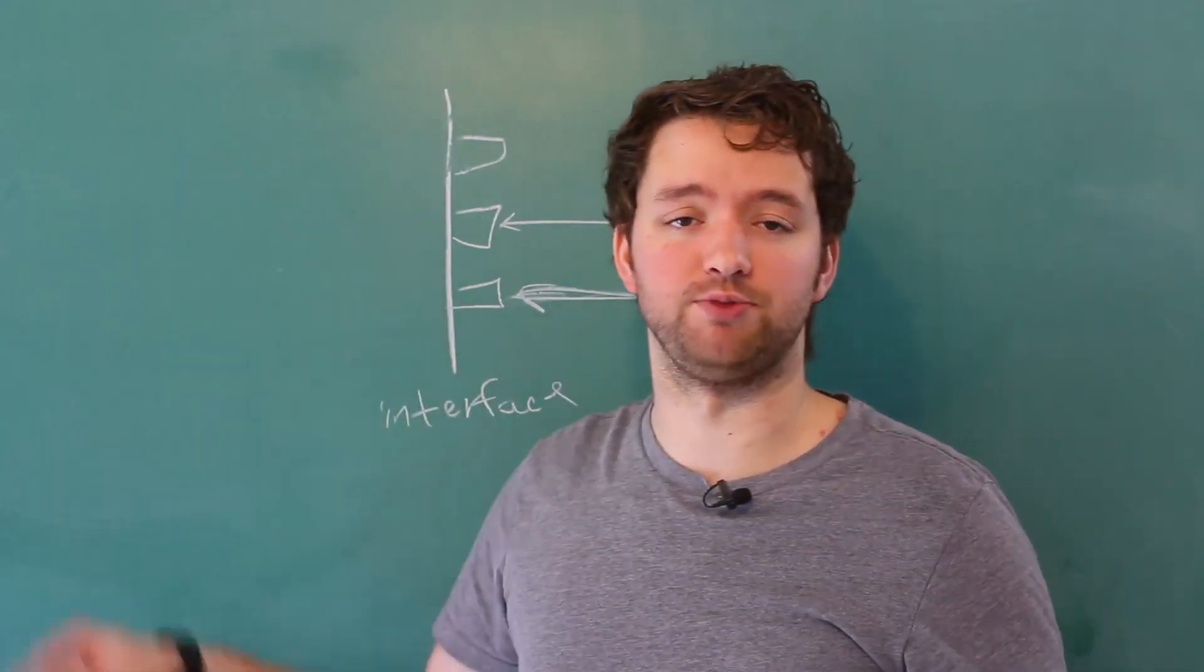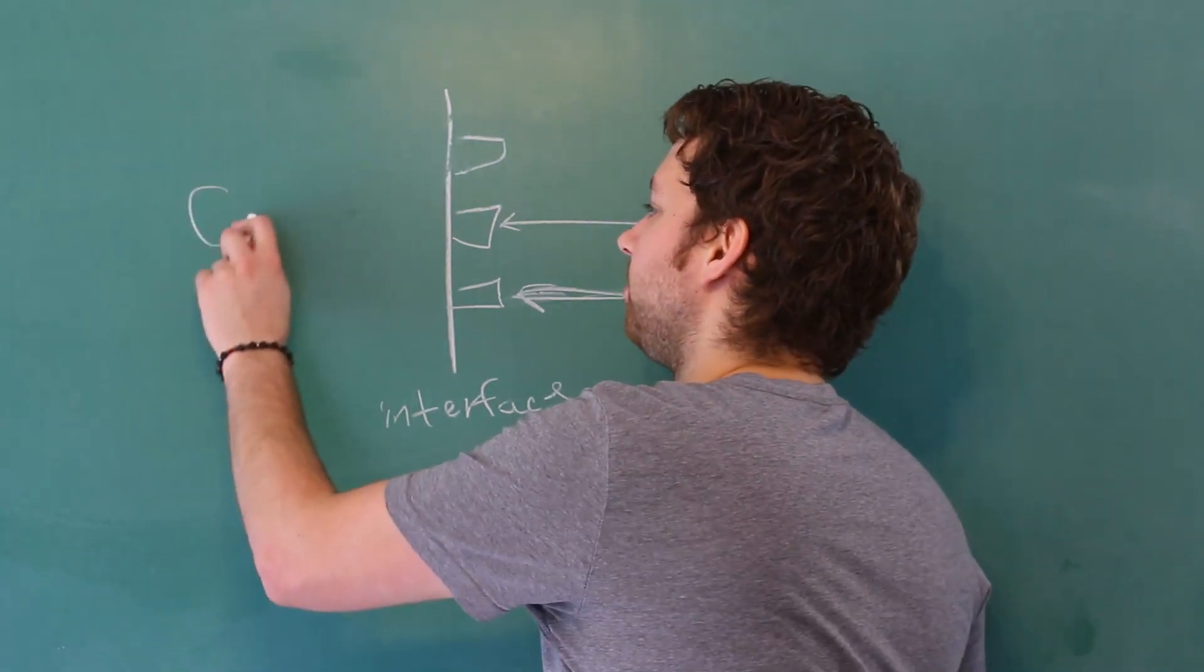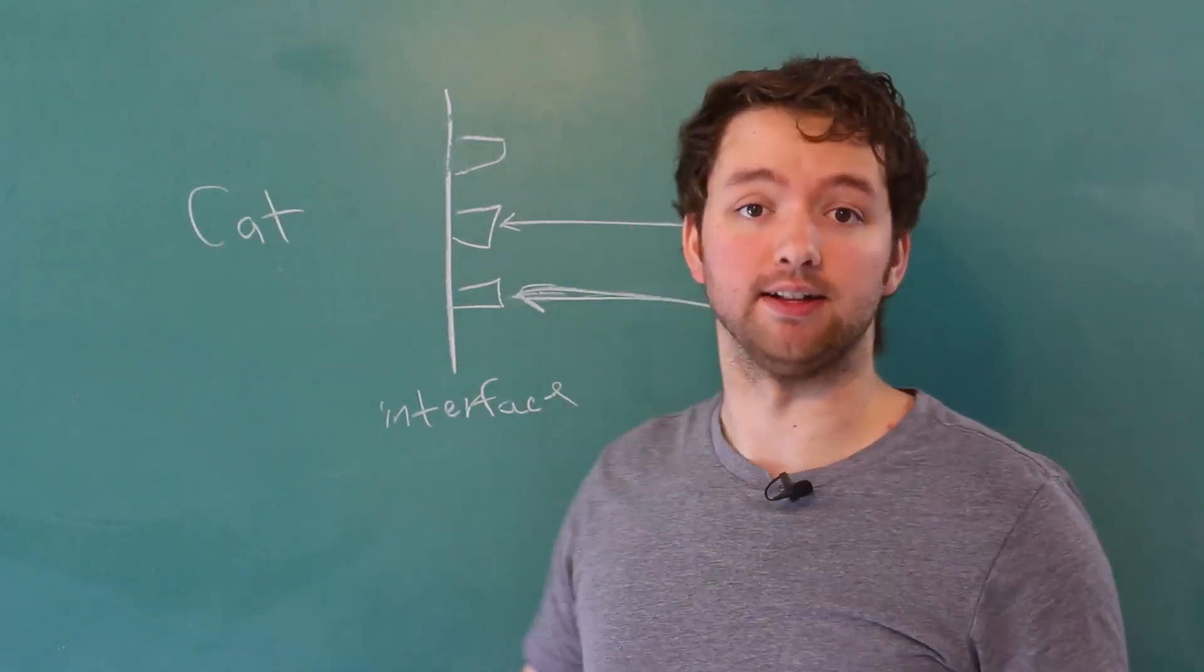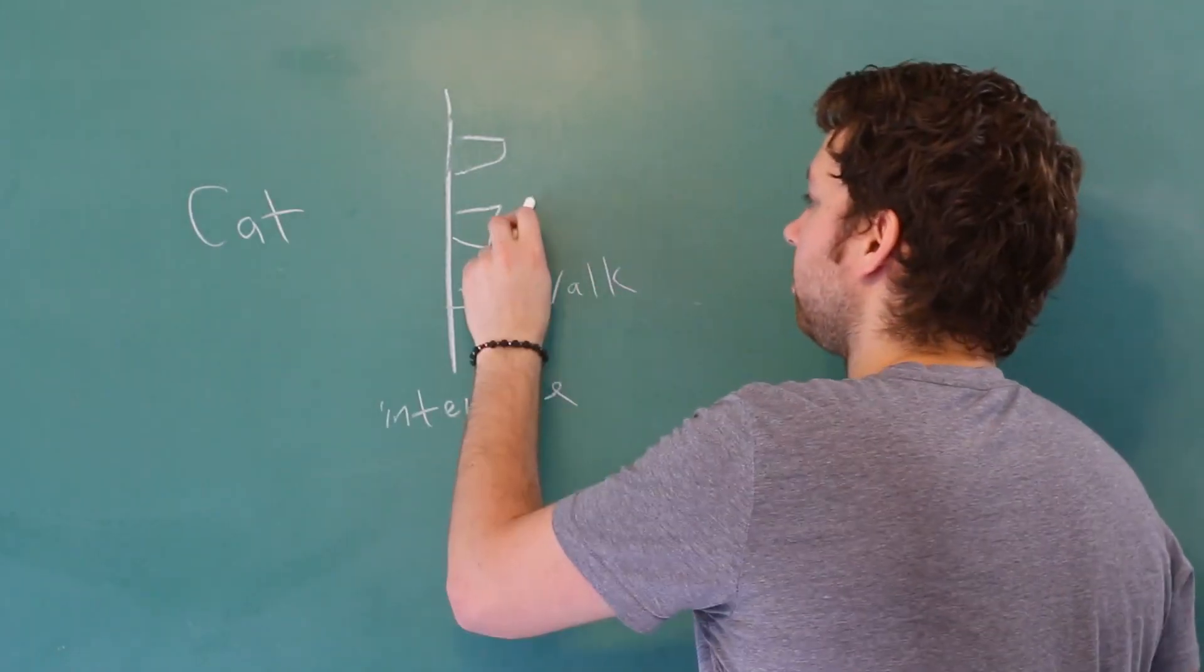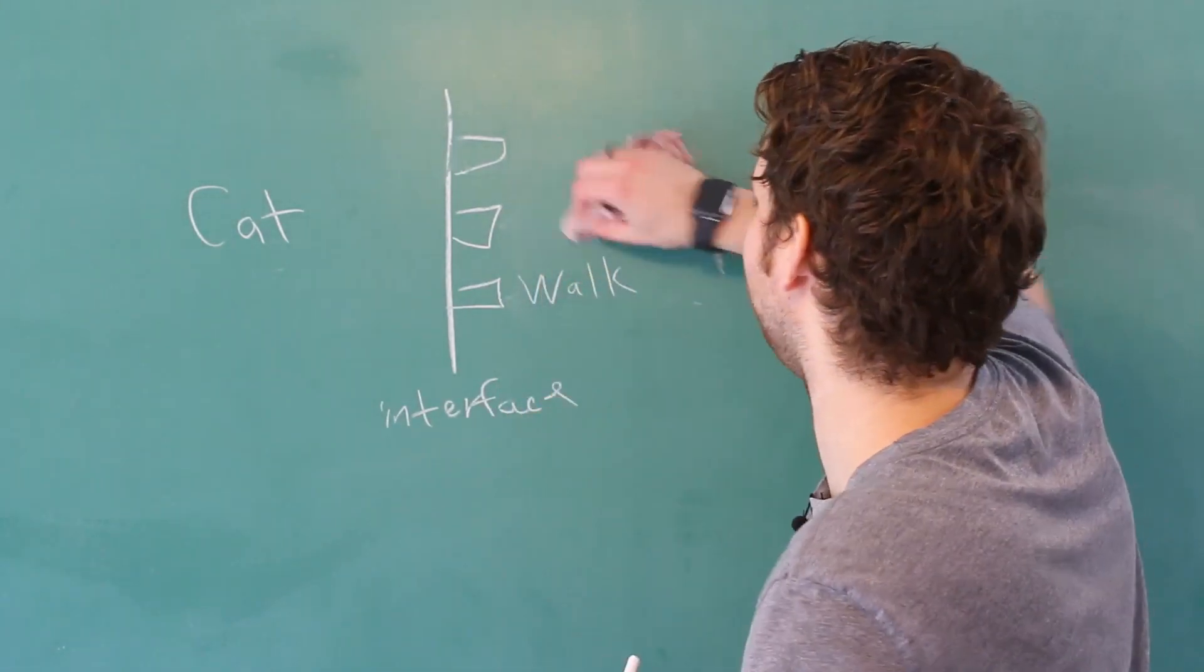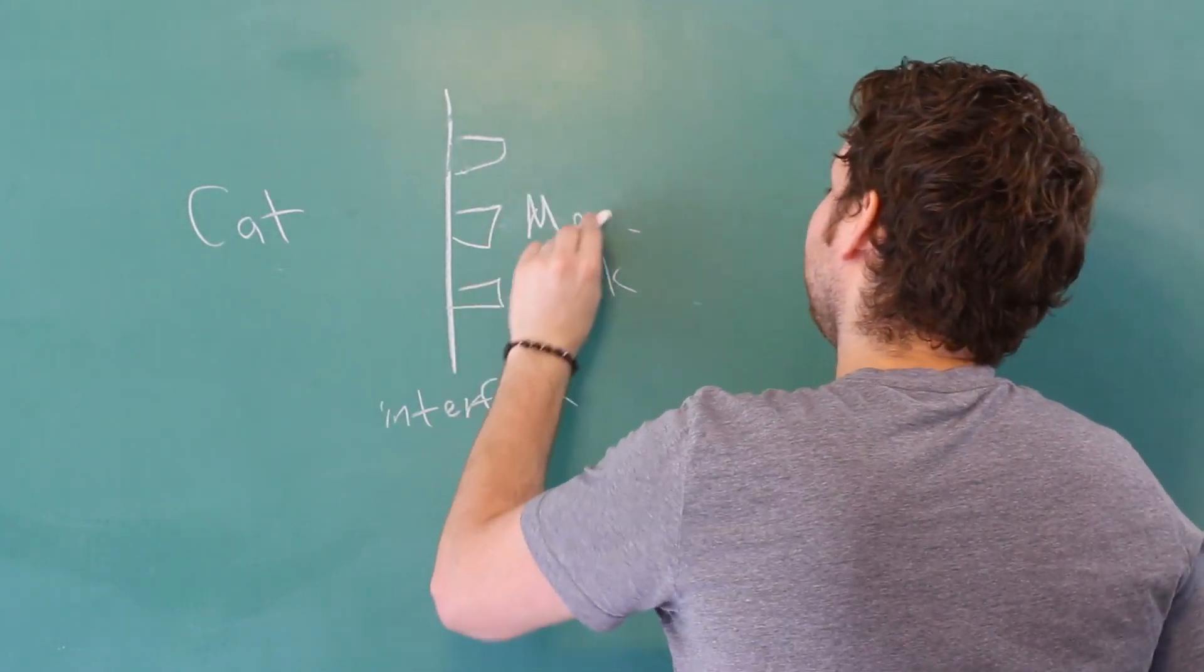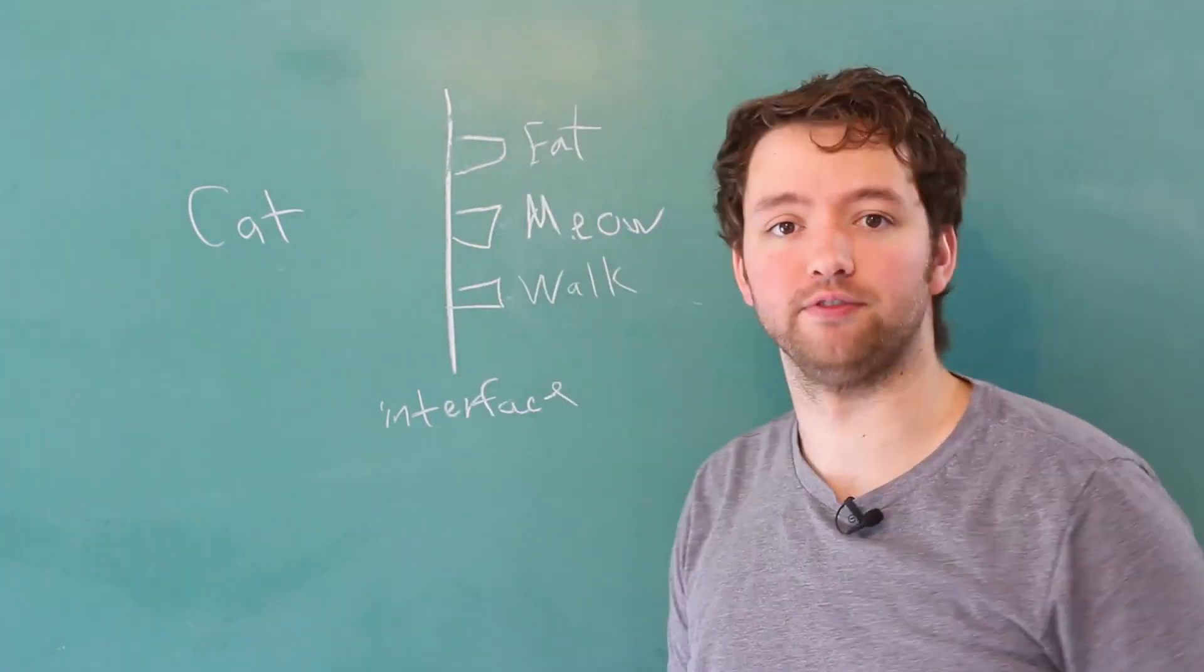So rather than working with a general object, let's say we're working with something specific, such as a cat. So I might have a cat class. And this cat can do certain things. This cat can walk, it can meow, and it can eat. It's pretty much the only thing cats are good for.